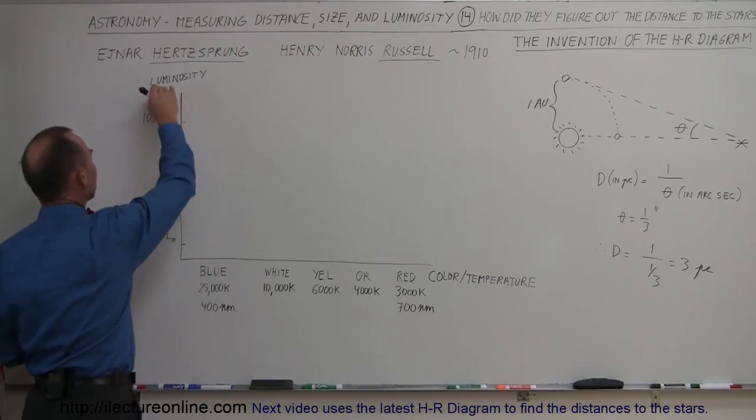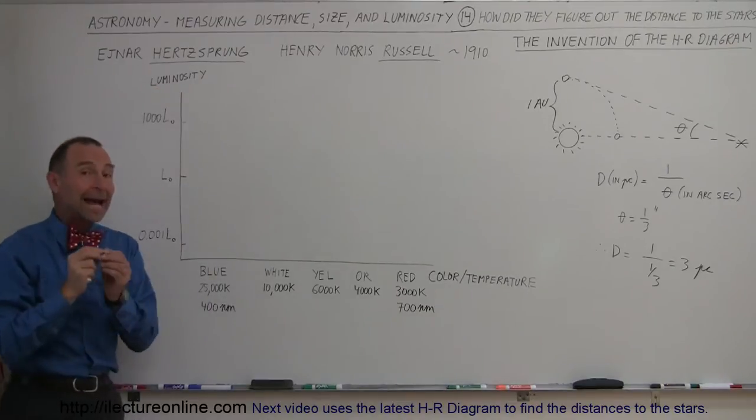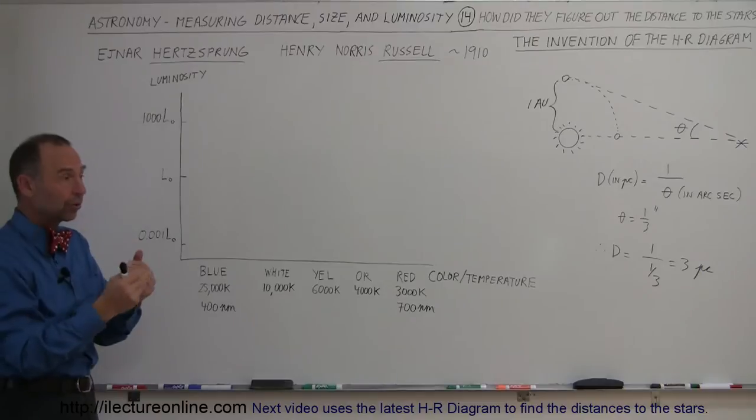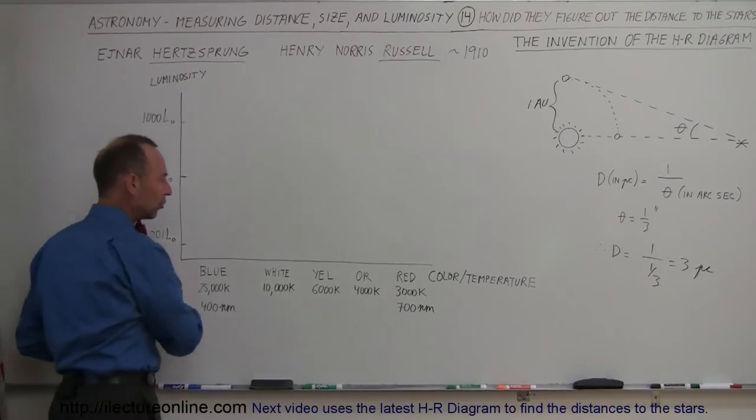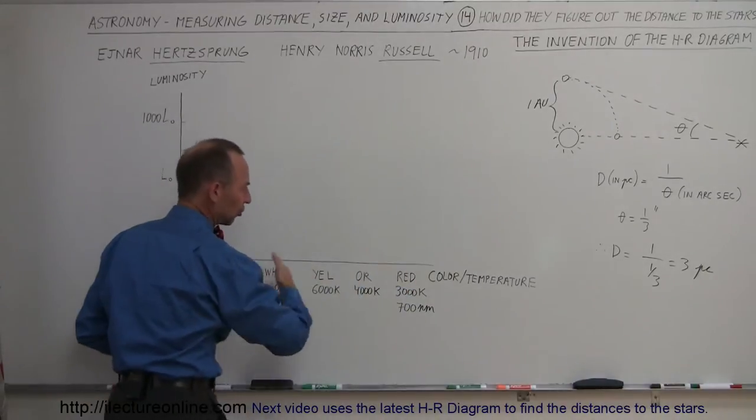On the vertical axis, it indicates the luminosity of the star, the actual luminosity, not the way it appeared to us but the way it actually was. Knowing how far the star was, they could figure that out. And also, versus the color of the star.